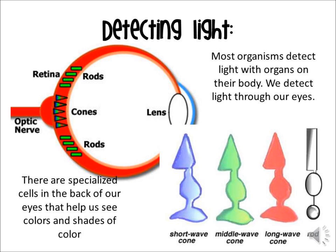Most organisms detect light using organs on their body — we do that with our eyes. At the back of the eye there are special cells: rods and cones. You've got millions of these in the back of each eye, and they help us see colors. Cones help see colors, while rods help see shades — what some people call black and white. Short-wave cones detect blue light, middle-wave cones detect greens and yellows, and long-wave cones detect oranges and reds. If something is maroon, you'd use your long-wave cone to see the red part, and the rod would show you that it's a darker red than normal.